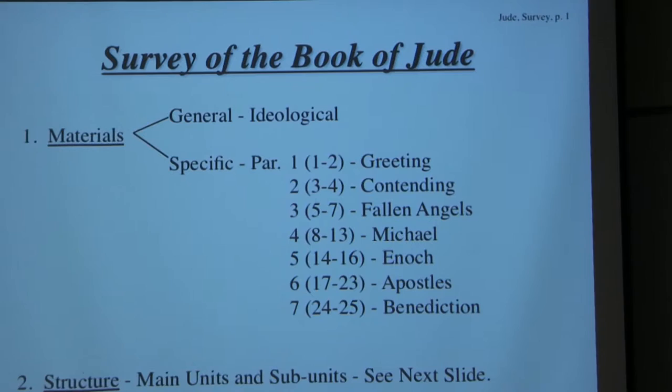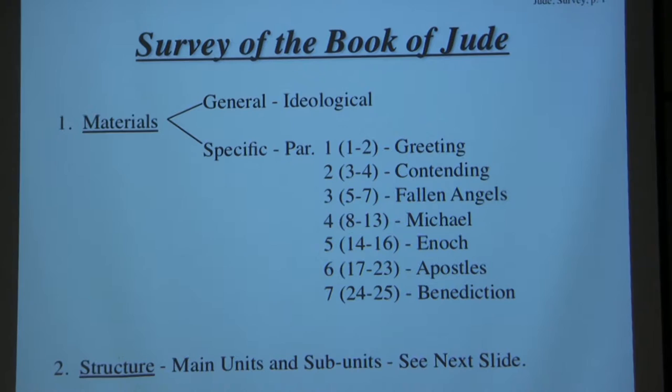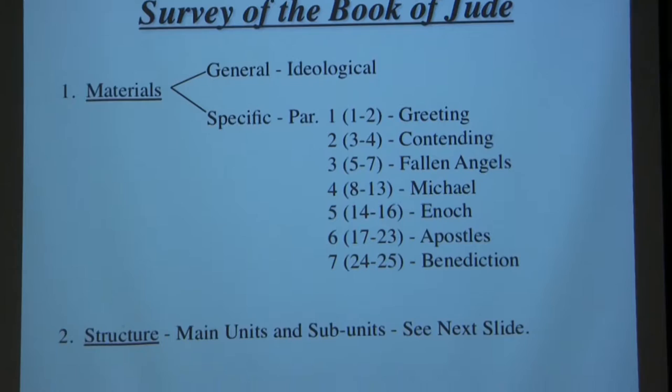You do have certain people mentioned, including Enoch for example, but the book is not about them. The book is really about ideas, and these persons and places and events are mentioned in the service of what is really the primary concern of the content of the book, which is the presentation of ideas.